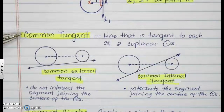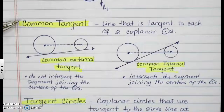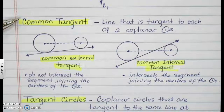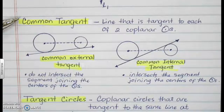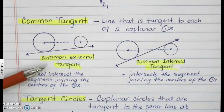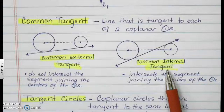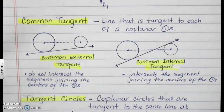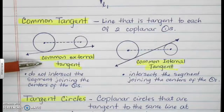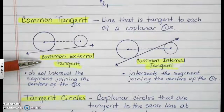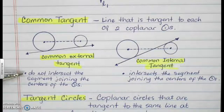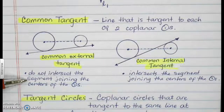A common tangent is a line that is tangent to each of two coplanar circles. There are two types: the common external tangent and the common internal tangent. A common external tangent is a line that does not intersect the segment joining the centers of the two circles.